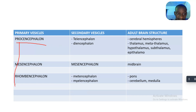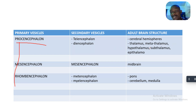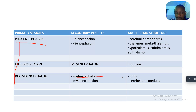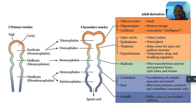So to recap using our mnemonics: prosencephalon — PMR — develops into DT, meaning the telencephalon and the diencephalon. The telencephalon becomes the cerebral hemispheres. The diencephalon becomes the thalamus, metathalamus, hypothalamus, subthalamus, and epithalamus. The mesencephalon continues and develops into the midbrain. The metencephalon develops into the pons and the cerebellum. The myelencephalon develops into the medulla. You can pause this video to look at this image in detail.